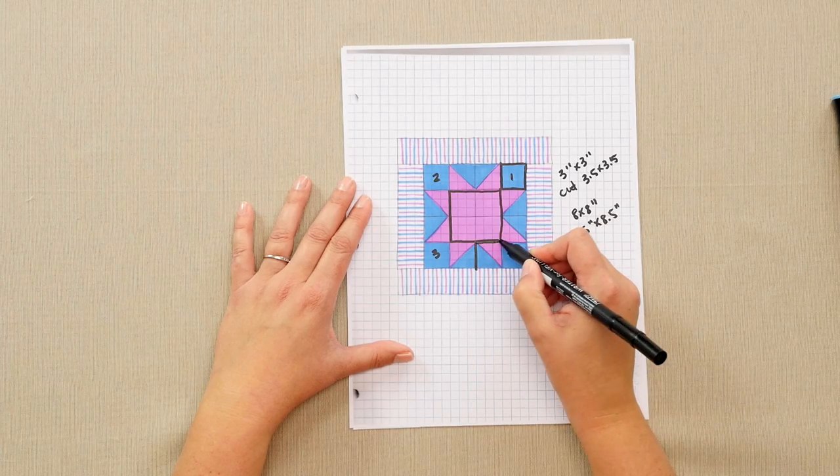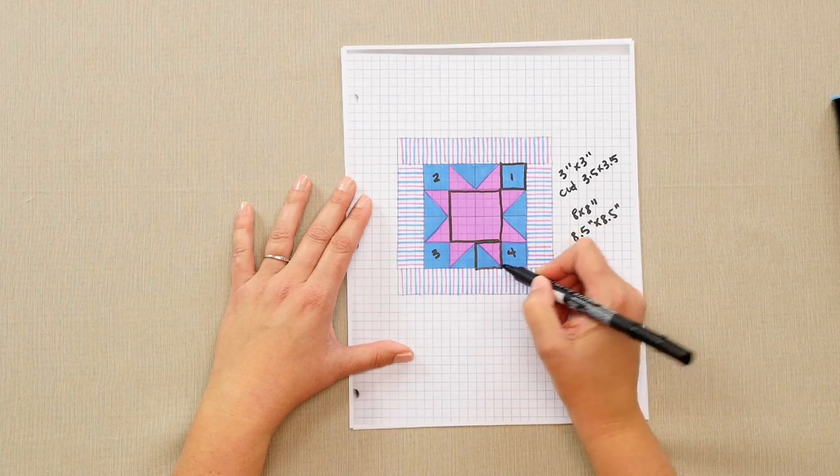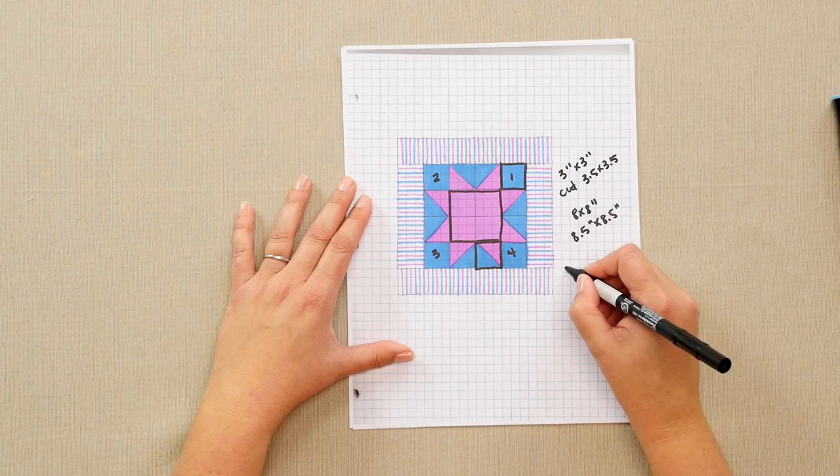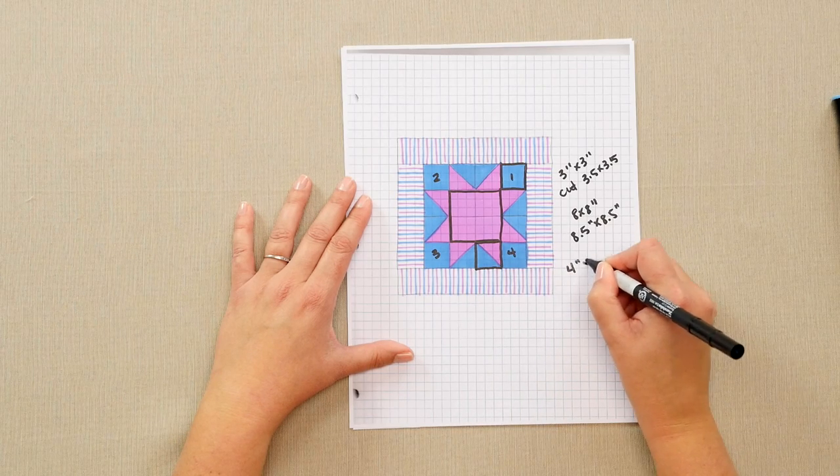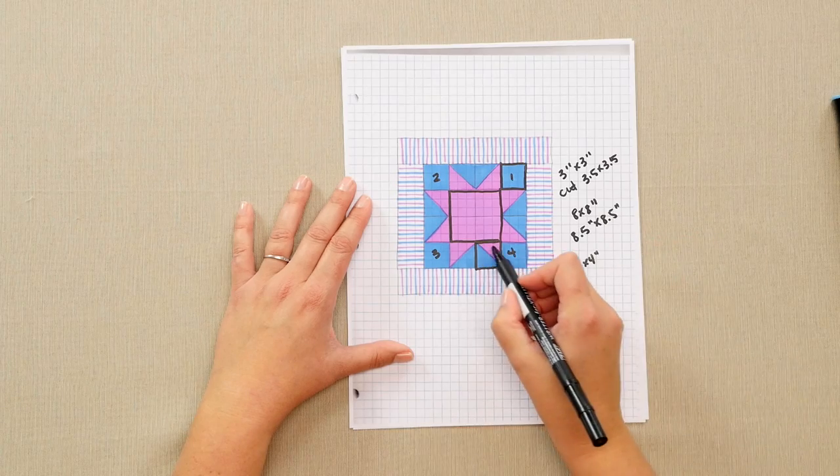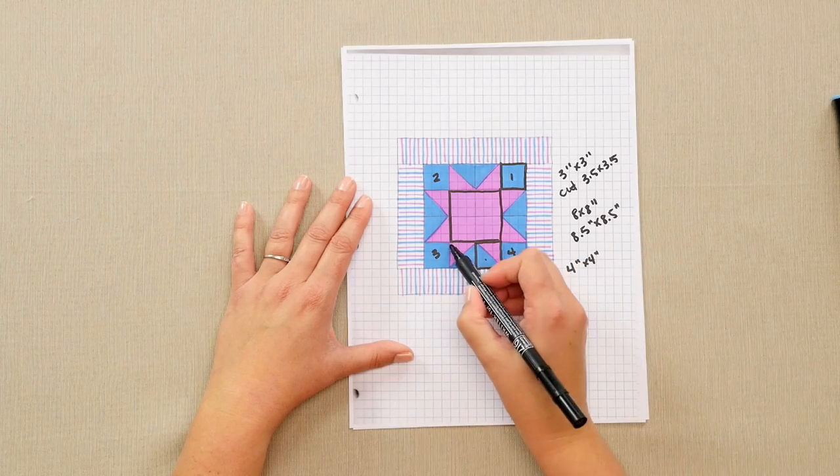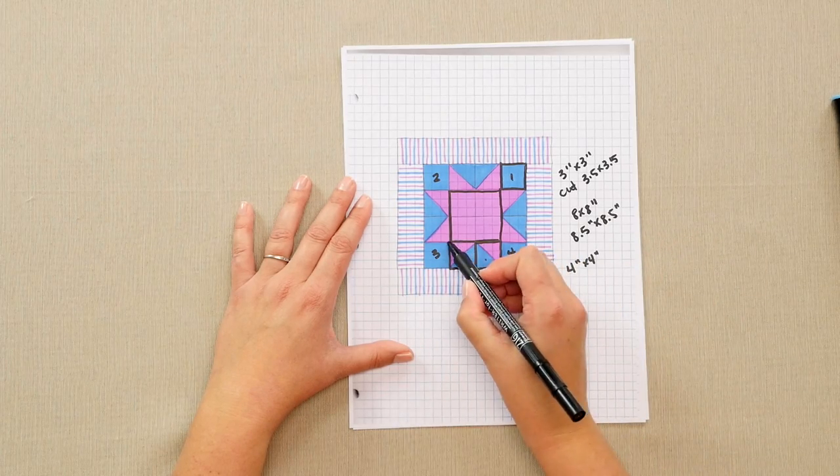My triangles are three inch finished. So I'll need to cut a four inch by four inch block of each color to make two half square triangle blocks.